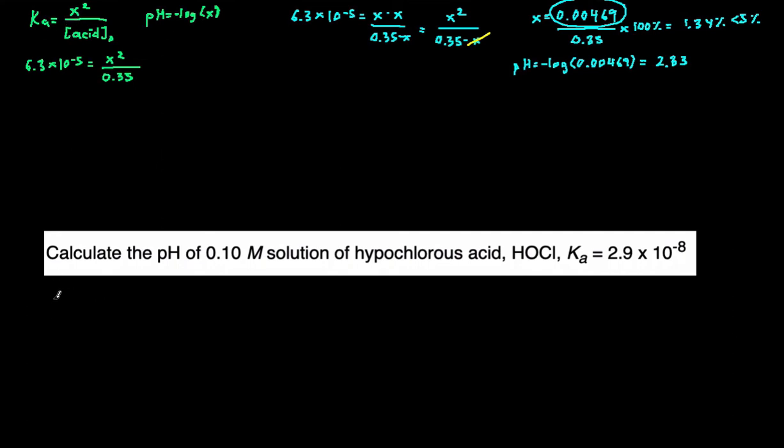I set up Ka equals X squared divided by the original concentration of the acid. Our Ka is 2.9 times 10 to the negative 8 equals X squared divided by the concentration of the acid, which is 0.10. Now I solve for X. X equals 5.39 times 10 to the negative 5. Once I have my X, my X is my H plus concentration, and I can just use pH equals negative log of the X. So I just take pH equals negative log of 5.39 times 10 to the negative 5, and I get my final answer of 4.27.